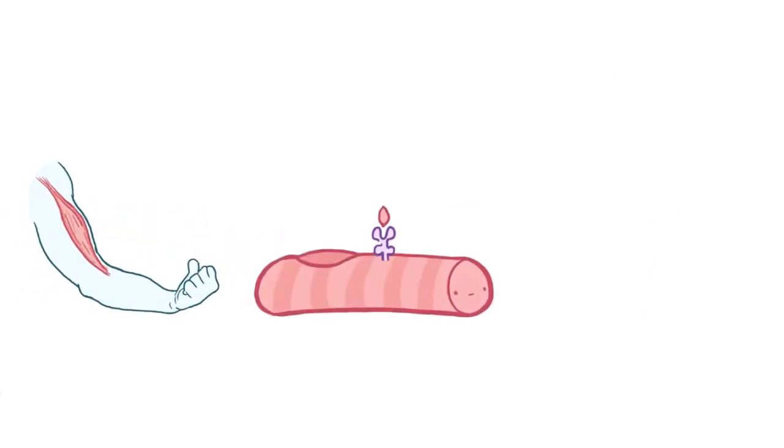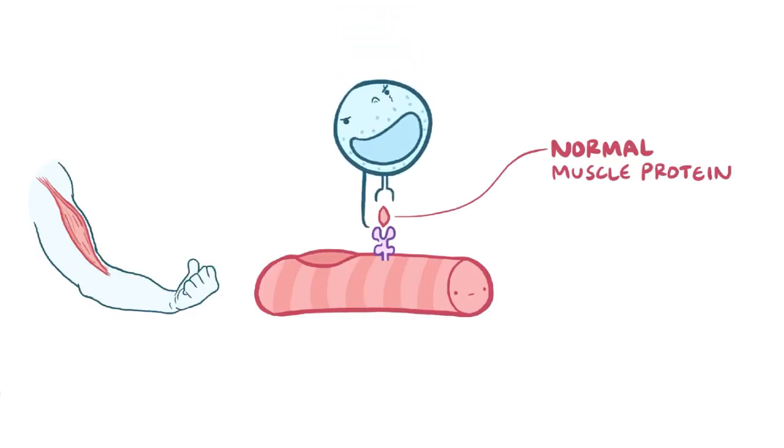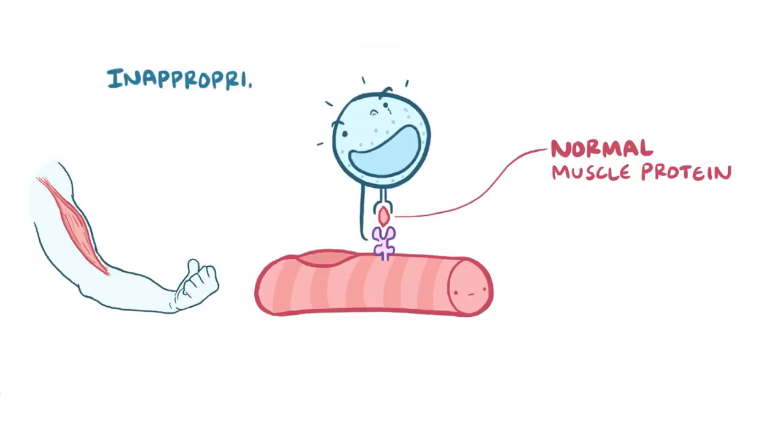In polymyositis, healthy muscle cells present normal muscle proteins on the MHC class 1 molecule, but the cytotoxic T cells inappropriately react to them, and they get activated.